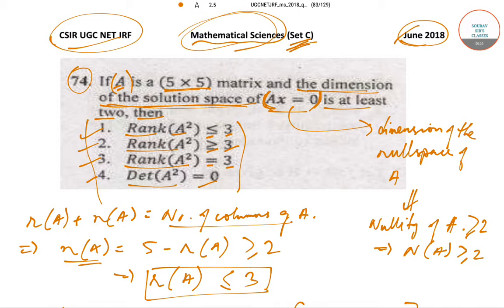The question is: if A is a 5×5 matrix and the dimension of the solution space of Ax = 0 is at least 2, then — Option 1: rank(A²) ≤ 3; Option 2: rank(A²) ≥ 3; Option 3: rank(A²) = 3; Option 4: det(A²) = 0.